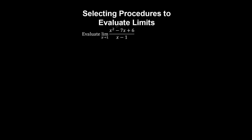Let's evaluate this limit of a rational polynomial expression. If we substitute one into this expression, we get zero on zero, and that doesn't give us enough information to evaluate the limit. So because we've got a quadratic in the numerator, we can try to factorise it. Now we can see that the x minus one cancels, so we'll see later that this is a removable discontinuity.